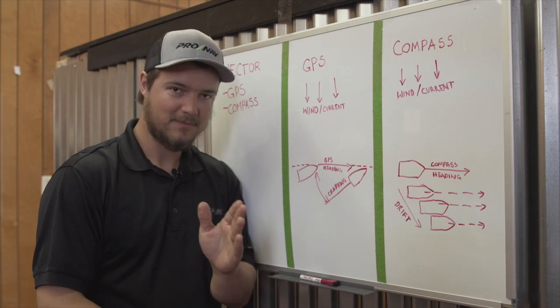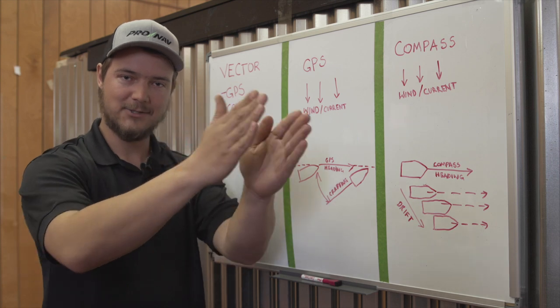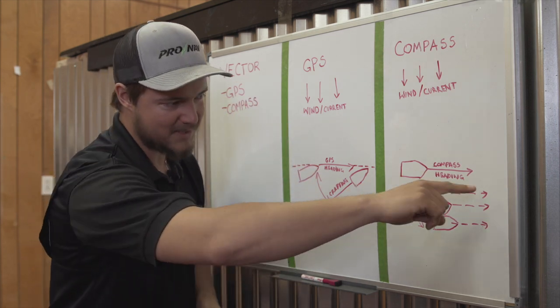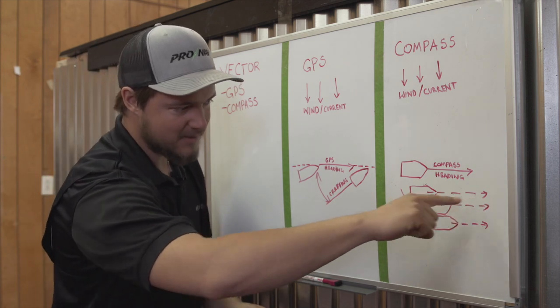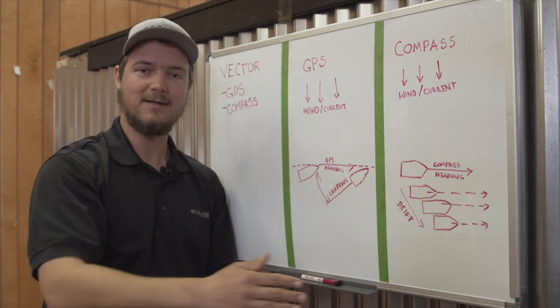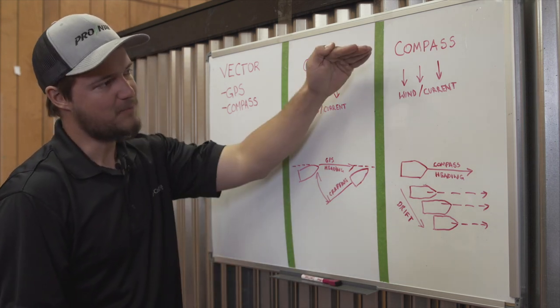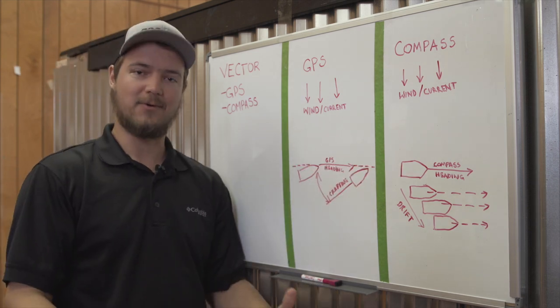However, all the while, the heading that my boat is facing, my actual orientation remains constant. I've locked my heading due north and my boat is facing due north. However, because of this wind, it's a crosswind, my boat is actually drifting downwind as I continue to head north.